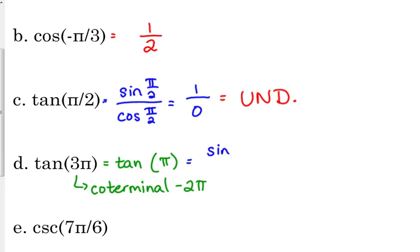So that means that the tangent of 3π is equivalent to the tangent of just π. And tangent is the sine over the cosine. The sine of π, π is on the negative x axis, so its y coordinate is 0. Its x coordinate is negative 1. What is 0 divided by negative 1? 0. That one's okay. 0 divided by a constant is okay. It is 0.